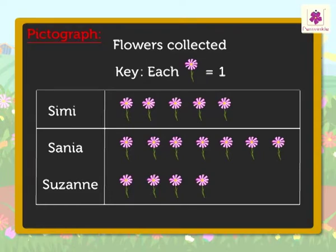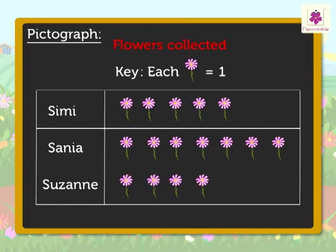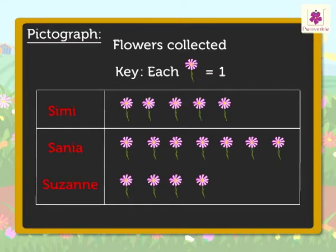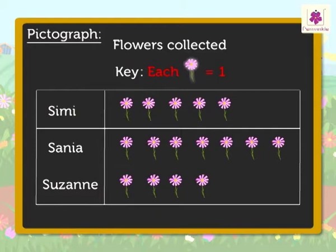Now, let us see how we can read this PICTOGRAPH of the flower farm example. The title, Flowers Collected, tells us the PICTOGRAPH is about the number of flowers collected. The labels give us the information of who collected the flowers. The key tells us that each flower picture is equal to one flower.